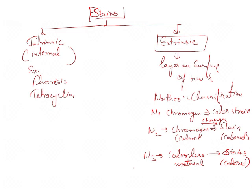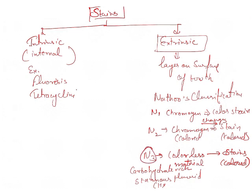The N3 type of stains are caused by carbohydrate-rich foods such as apples and potatoes, as well as stannous fluoride and chlorhexidine. These are N3 type stains where colorless material binds to the surface of the tooth and a chemical reaction leads to staining of the teeth.